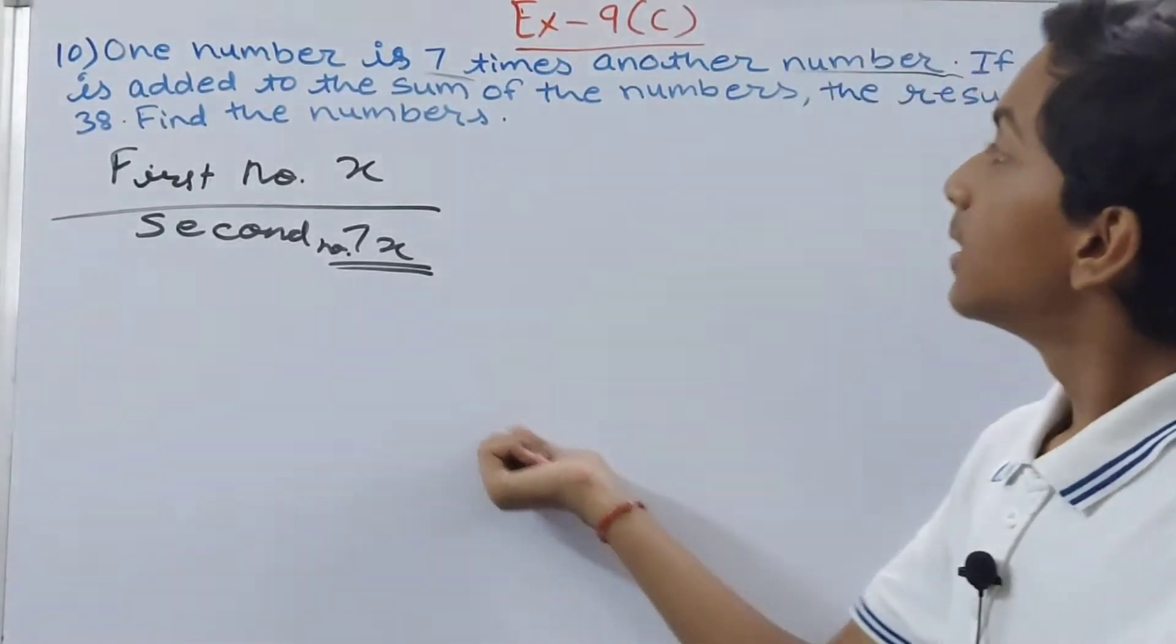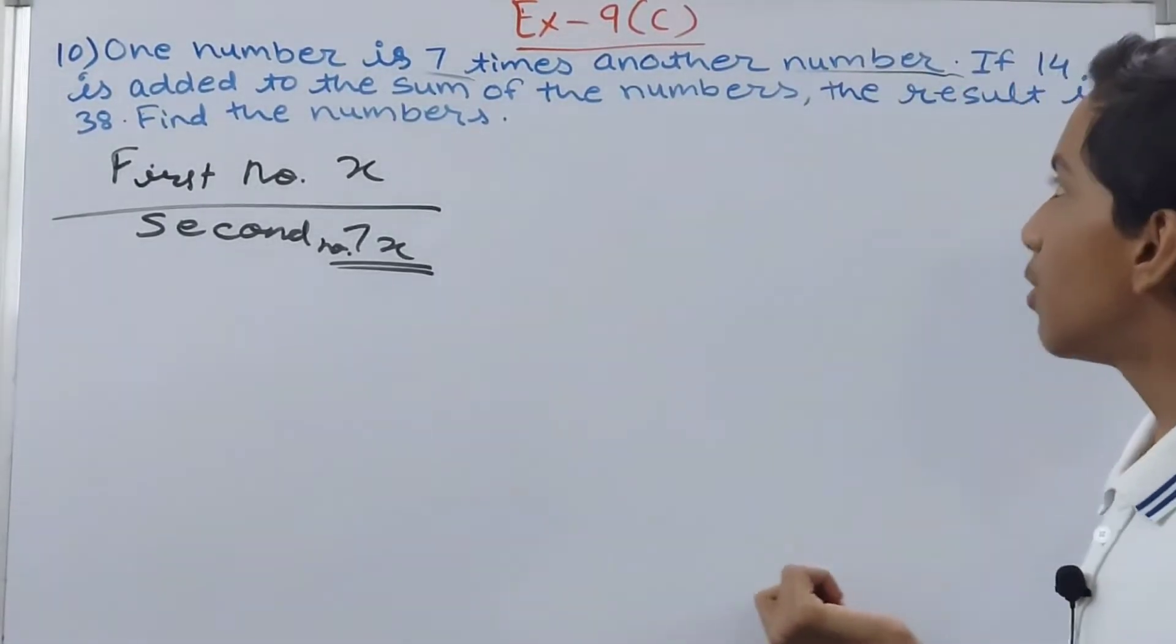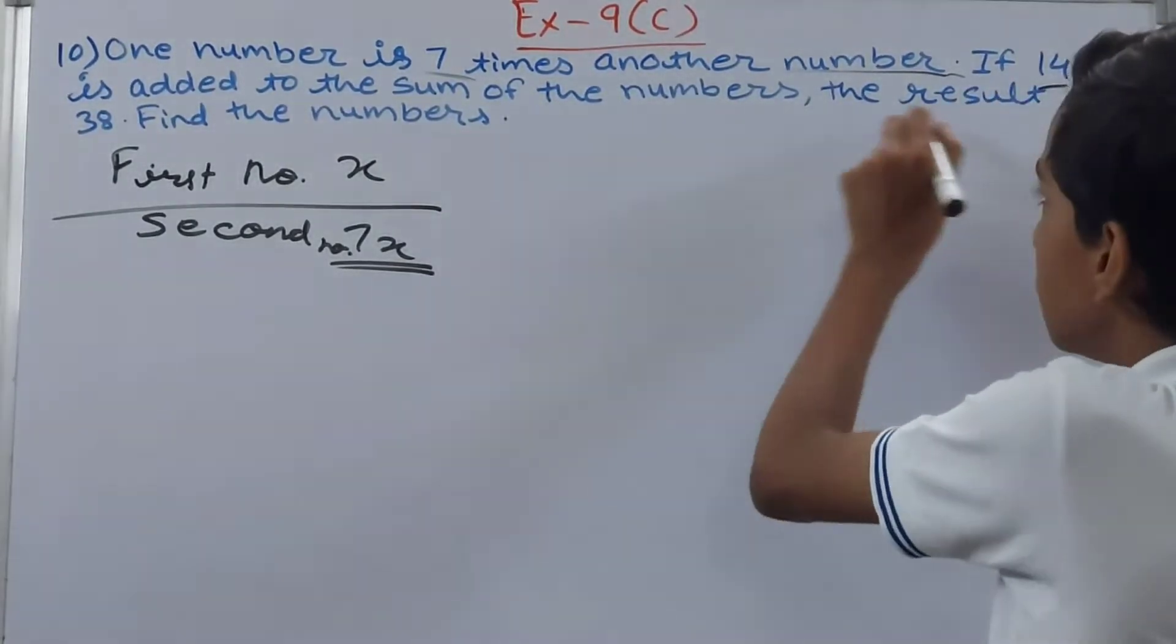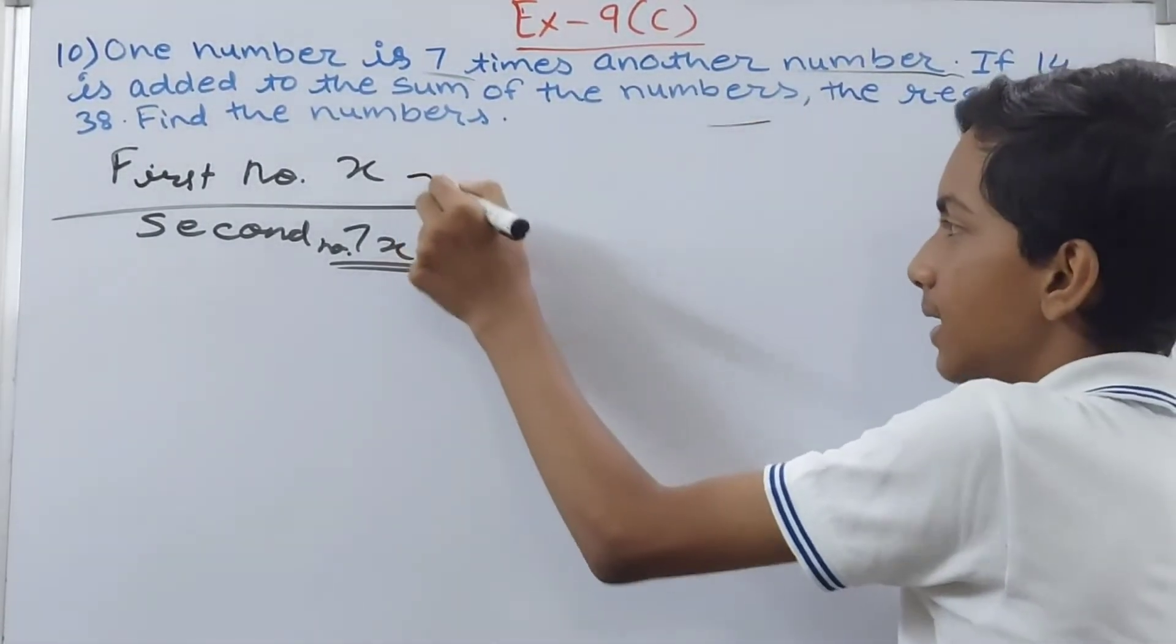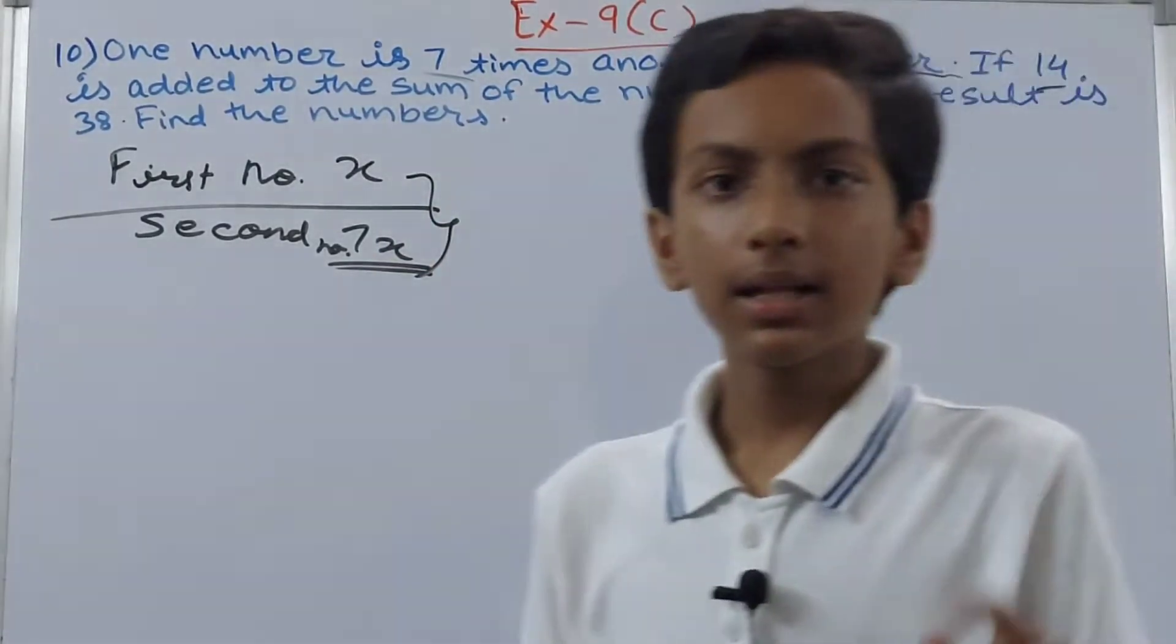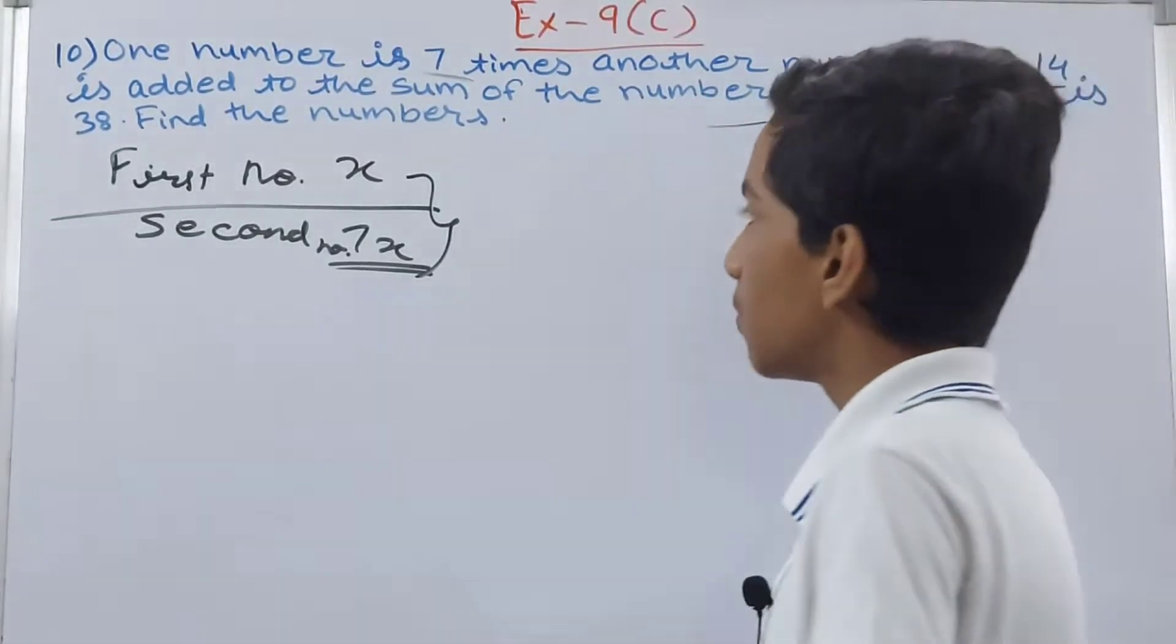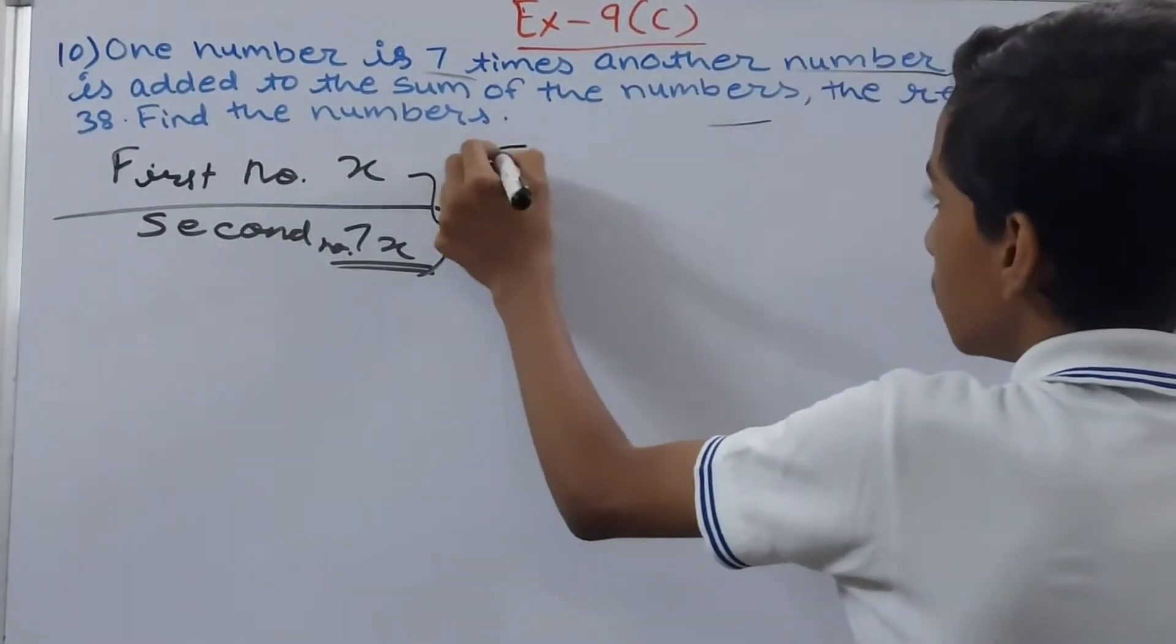Now when 14 is added to the sum of the numbers, that is x and 7x, when 14 is added to this, then our answer is 38. Find the numbers. We can make the equation here.